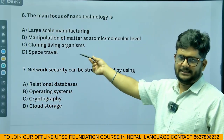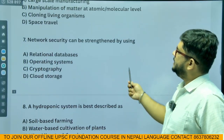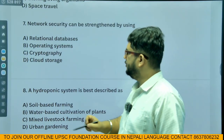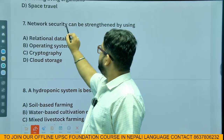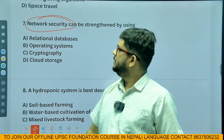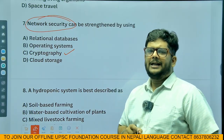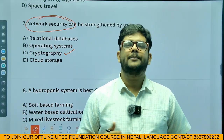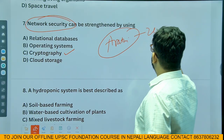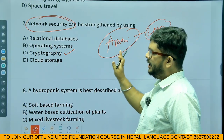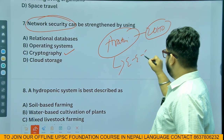Network security can be strengthened by using cryptography. Let's understand about cryptographic techniques — cyber security. End-to-end encryption is one method; for example, WhatsApp uses end-to-end encryption.